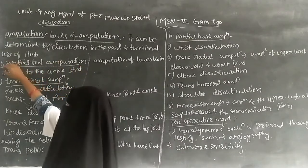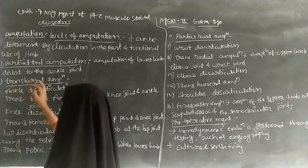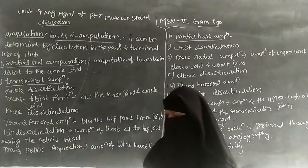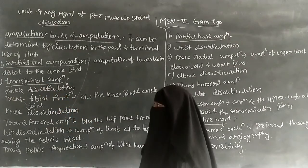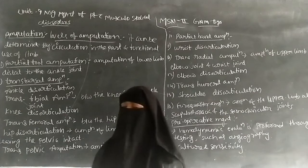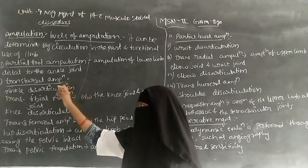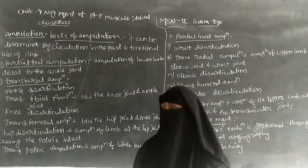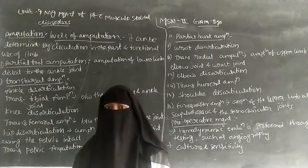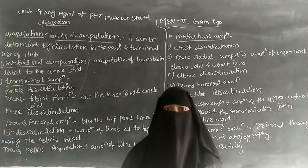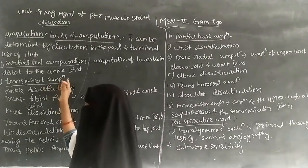The next level is trans-tarsal amputation. In trans-tarsal amputation, it includes the tarsal bones — from the tarsal bones up to the fingers, this region is removed by the amputation.